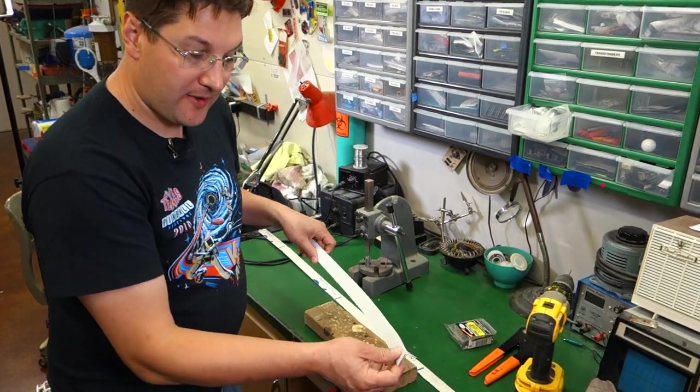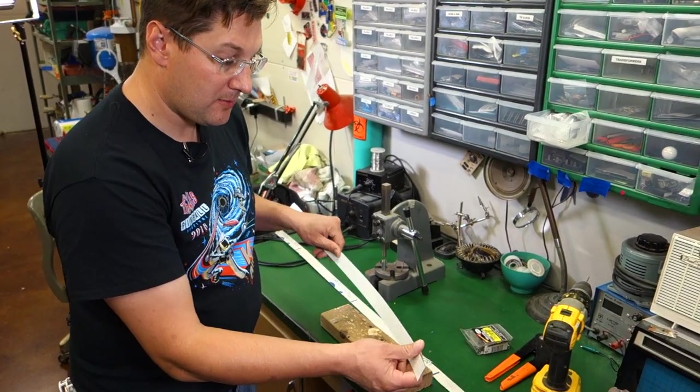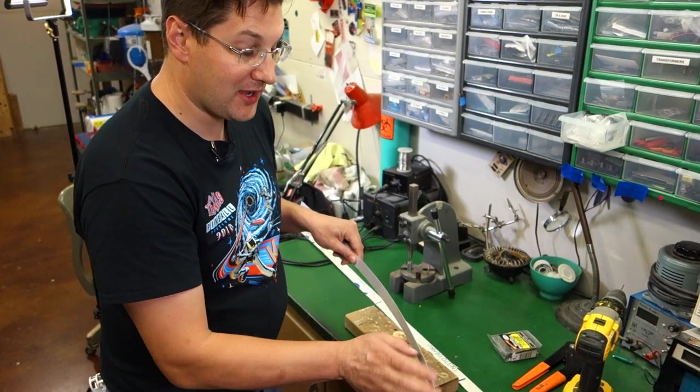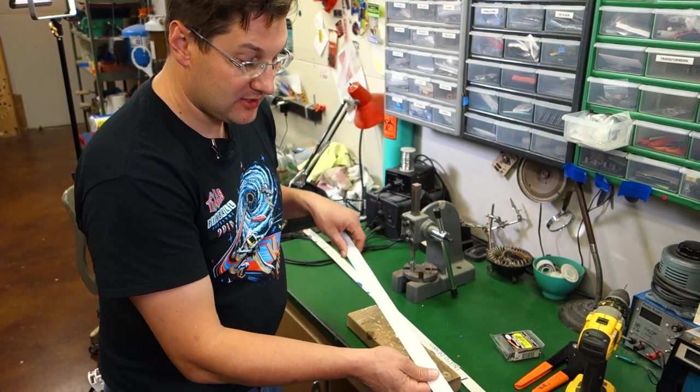What I did when I made my first set of ball guides is I took sheet metal, this is thinner than I needed, probably more like a 20 gauge, and I cut it to about an inch and an eighth tall.